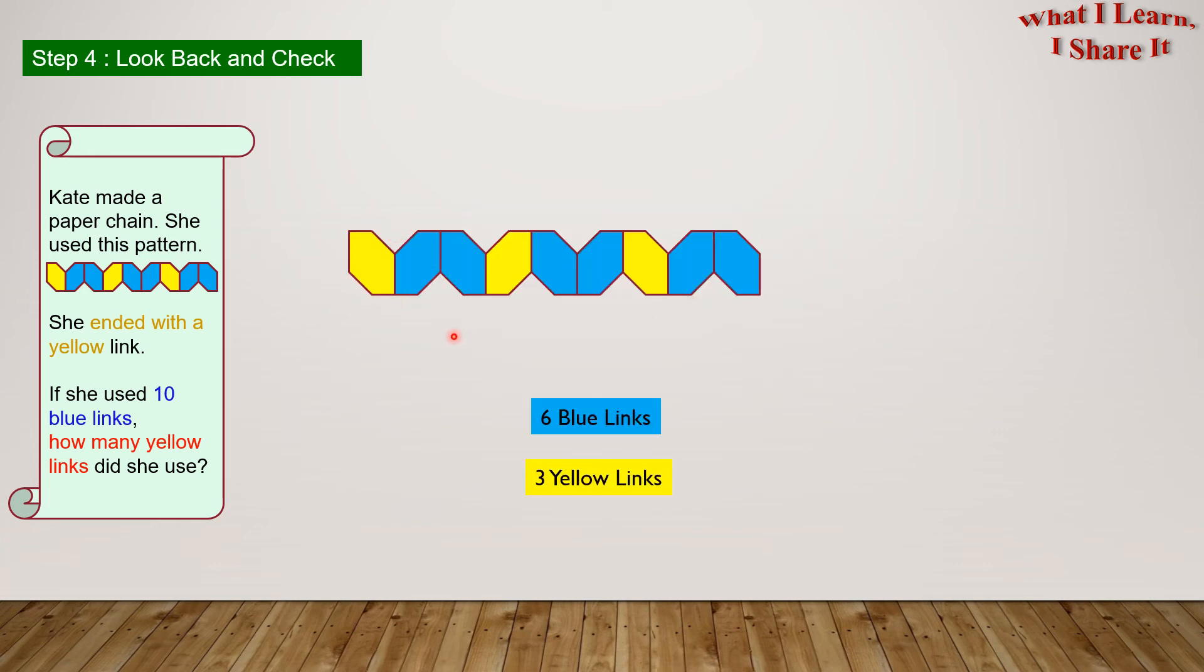So, here is Kate's chain again, and there are six blue links and three yellow links. So if we add another yellow link, there will become four yellow links. We are going to add another blue link, which will make seven blue links. Another blue link will make eight blue links. Let's add another yellow link. This will make five yellow links. Another blue link will make nine blue links, and another blue link will be ten blue links.